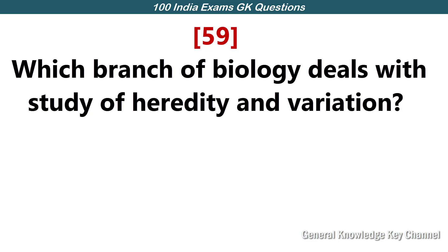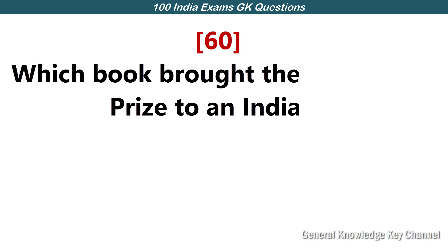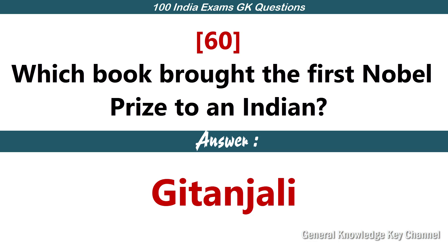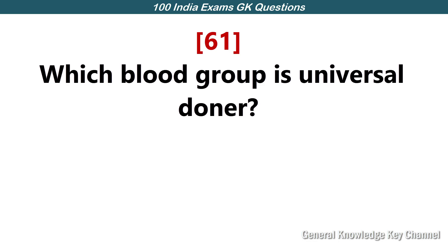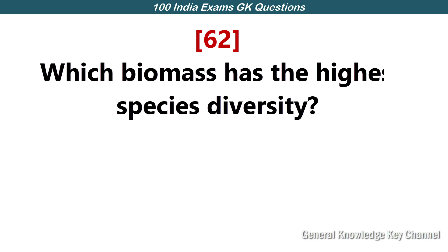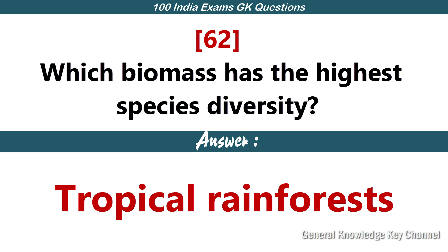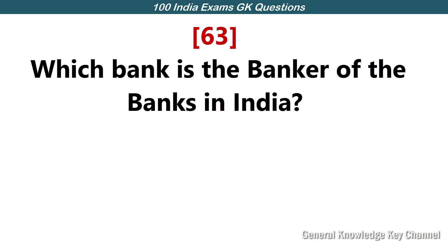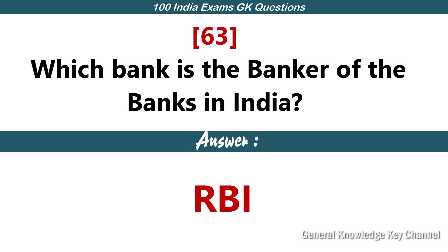Which branch of biology deals with the study of heredity and variation? Genetics. Which book brought the first Nobel Prize to an Indian? Gitanjali. Which blood group is the universal donor? O. Which biome has the highest species diversity? Tropical rainforests. Which bank is the banker of bankers in India? RBI.